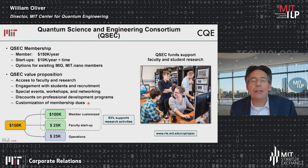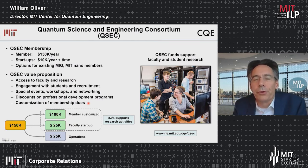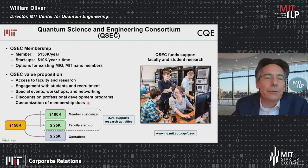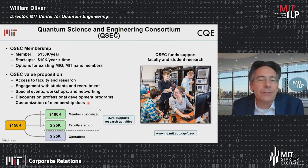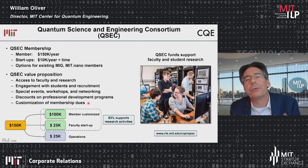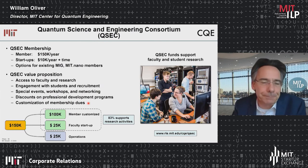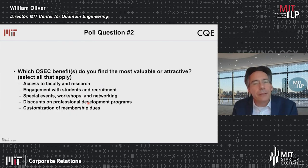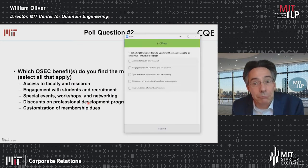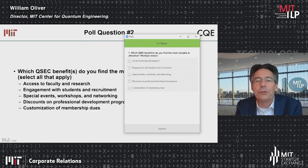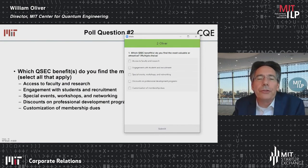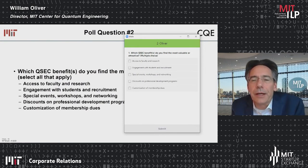So 83% of fees go directly to research here at MIT as a gift, making them discretionary and not incurring overhead — these funds go even further than a sponsored research agreement. The second poll question asks which benefits of the Center for Quantum Science and Engineering Consortium you or your company would find most valuable, and you can select all that apply. Options include access to faculty and research, engagement with students leading to recruiting, special events and workshops, networking, discounts on professional development programs, and customization of membership fees.